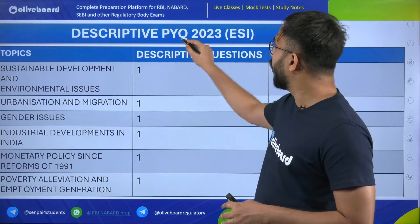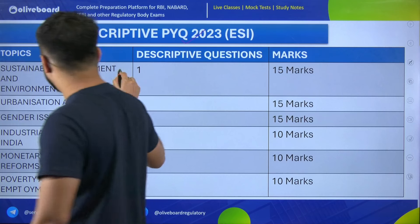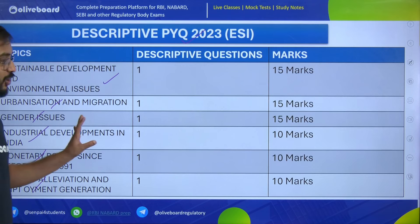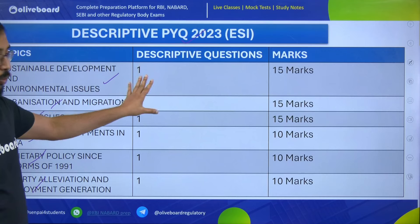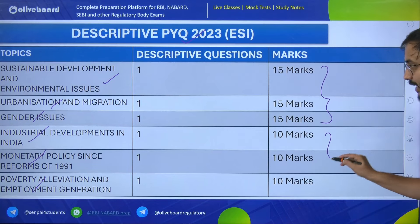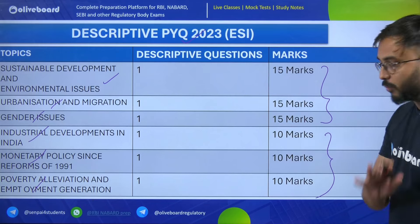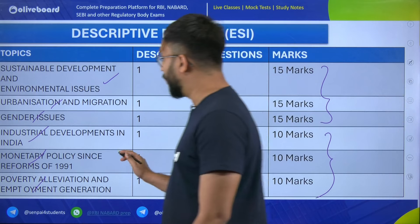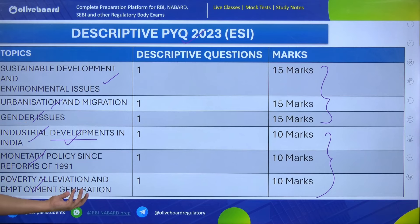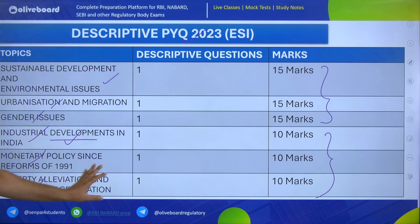Now let's see the second part: descriptive for the year 2023. The topics were sustainable development and environmental issues, urbanization and migration, gender issues, industrial development, monetary policy since reforms of 1991, poverty alleviation, and employment generation. One question came from each topic. Sustainable development, urbanization and migration, and gender issues were for 15 marks; the remaining questions were for 10 marks. The 10-marker questions related to monetary policy, opening of the economy in 1991, industrial development, and poverty alleviation. All these questions are completely static — no hint of current affairs.